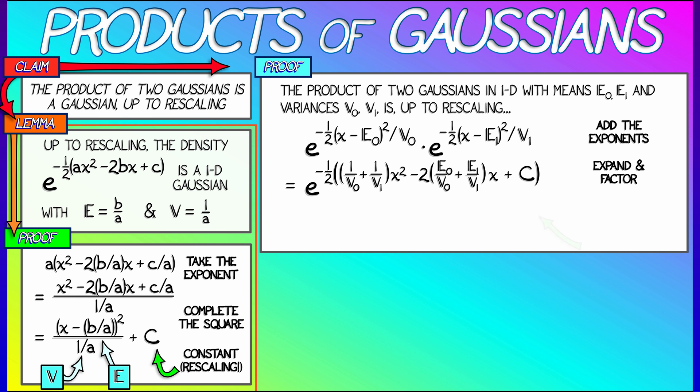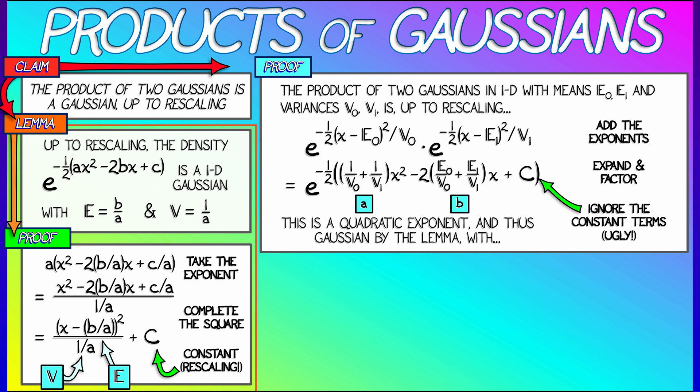But notice what we have. We have something that fits this lemma, where for a, we have the quantity 1 over v0 plus 1 over v1. And for b, we have the quantity e0 over v0 plus e1 over v1. So now we can use this lemma and determine that the new variance is 1 over a, that is 1 over quantity 1 over v0 plus 1 over v1. With a little bit of algebra, putting that over a common factor, I get v0 v1 divided by v0 plus v1.